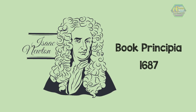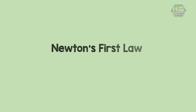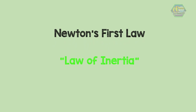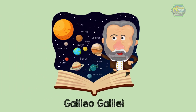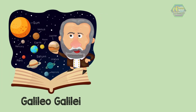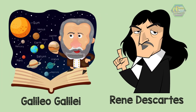Now that we know the history of the laws of motion, let's tackle them one by one. Newton's first law is known as the law of inertia. The law of inertia was first formulated by Galileo Galilei for horizontal motion on Earth and was later generalized by René Descartes.